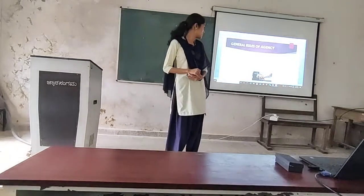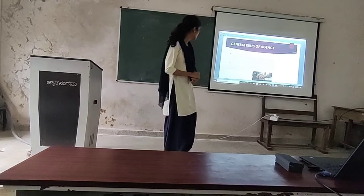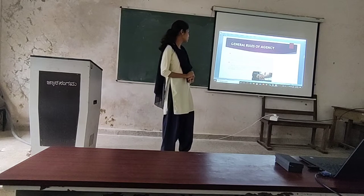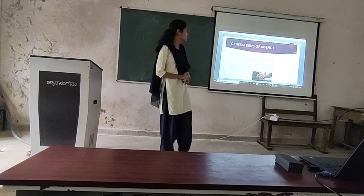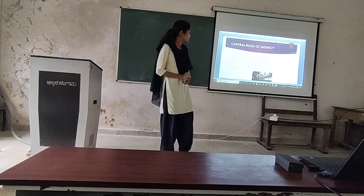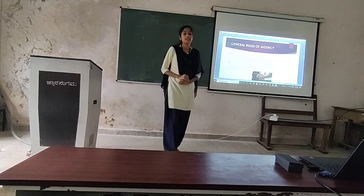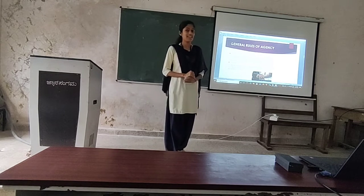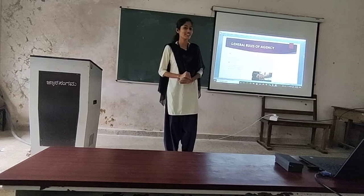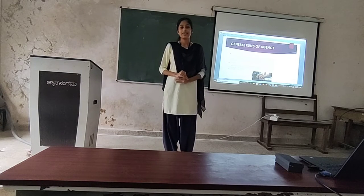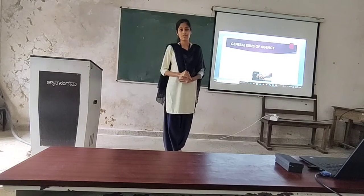Rule two: whatever a person can do himself, he may also do through an agent, except in cases of acts requiring personal services such as painting or marriage. This rule says that the agent can do any lawful work except personal services — for example, the agent cannot get married on behalf of the principal.